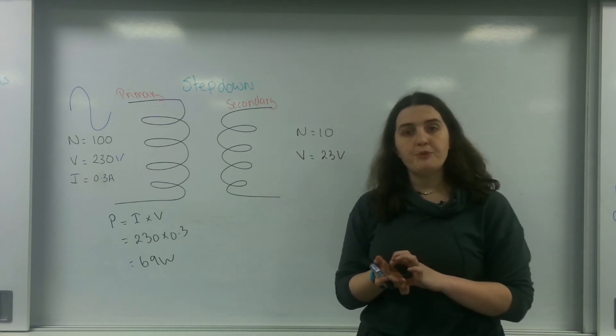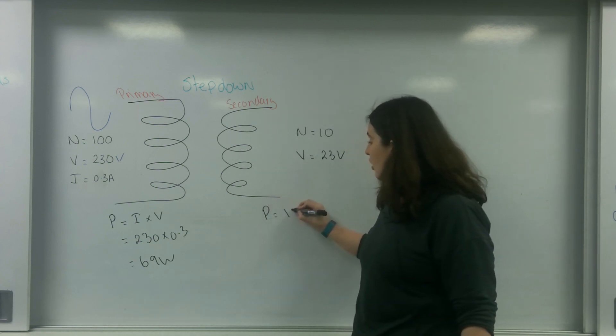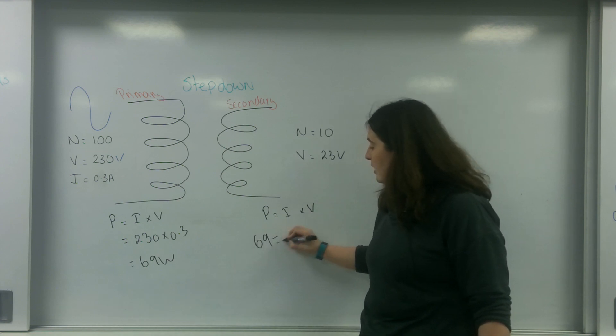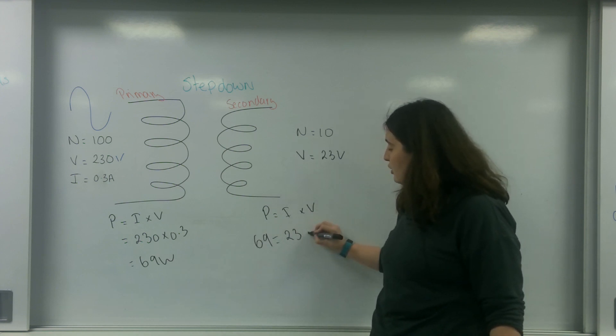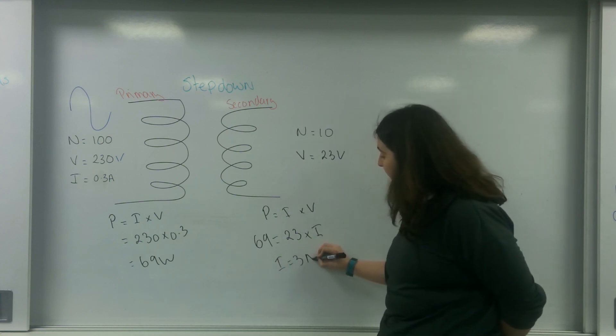But like I said before, energy has to be conserved. So power is I times V, and I know it must be 69. So 23 times my current means my current must be 3 amps.